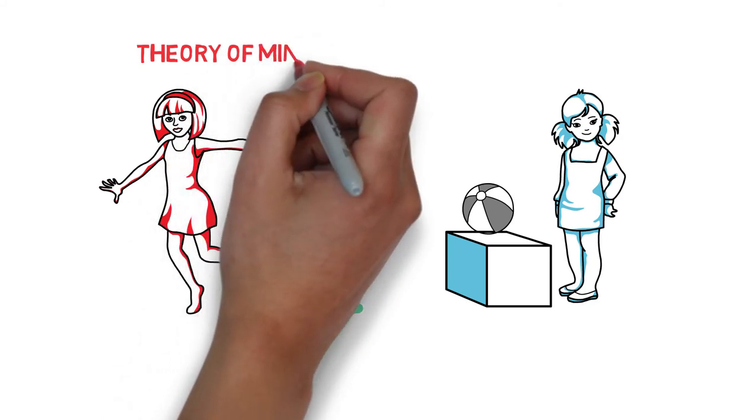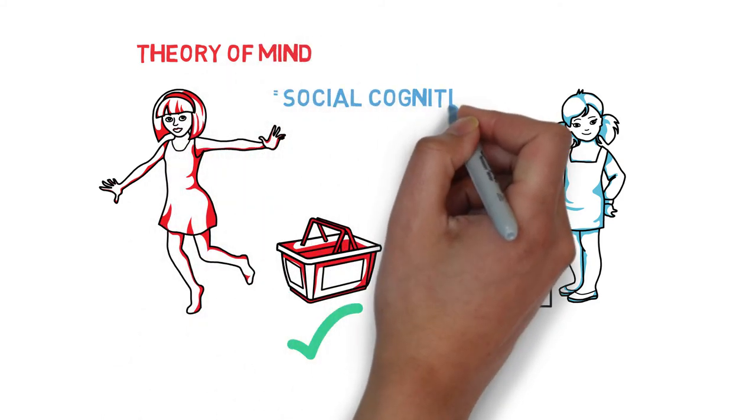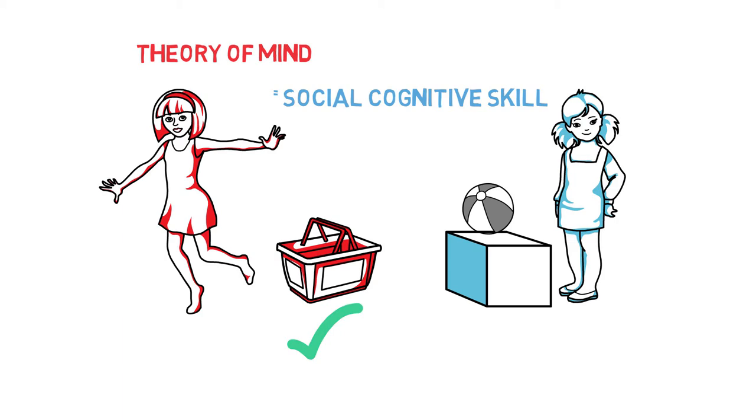Theory of mind is an important social cognitive skill. It involves the ability to think about mental states, not just knowledge, but also emotions, desires, and beliefs.